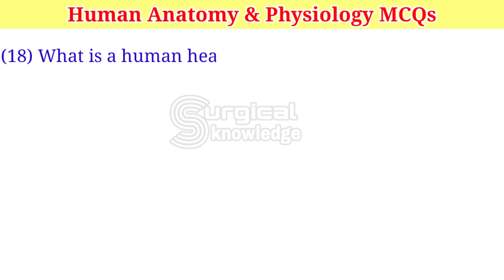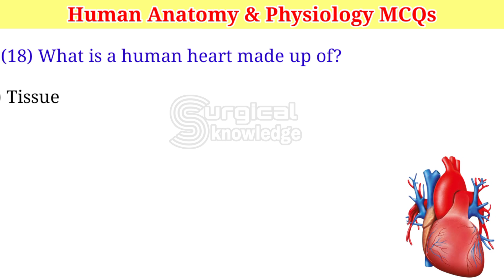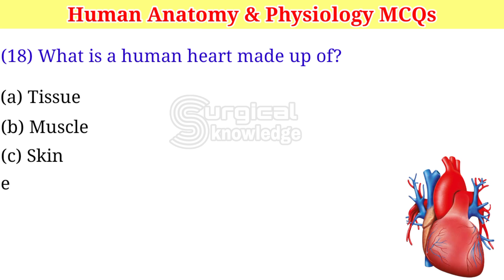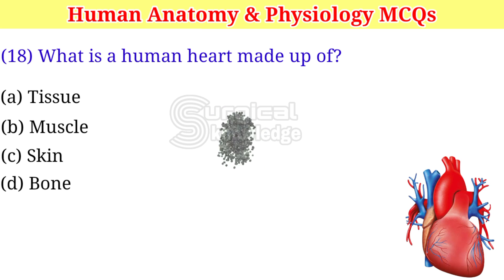What is a human heart made up of? A. Tissues. B. Muscle. C. Skin. D. Bone. Right answer is muscle.